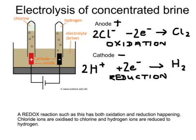So the electrolysis of concentrated brine is a redox process — one which has both oxidation and reduction happening. The chloride ions are oxidised to chlorine, and the hydrogen ions are reduced to hydrogen.